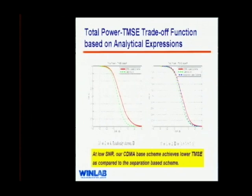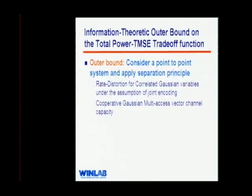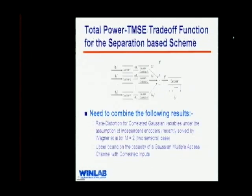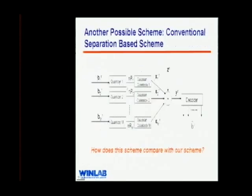Regarding the comparison with Lapidoth: he proves for the two-sensor case that below a certain SNR, uncoded transmission is optimal. So our scheme is optimal below that SNR threshold. However, Lapidoth considers only one-dimensional signal space for uncoded transmission, while our work considers L-dimensional signal space — a more general case. In higher dimensions, comparing our scheme against the outer bound shows our scheme is not always optimal.